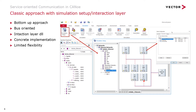Before we go to the new approach, let's look back at how we made simulations in the last 15 to 20 years within CANoe. We had a classic bus-oriented, bottom-up approach — CAN, LIN, FlexRay, Ethernet communication. We loaded the database, said we want to simulate a node, used an interaction layer DLL which knows how to interpret the DBC file or whatever, and knows: I'm in the role of IC, so I need to transmit these 10 frames cyclically and receive those frames. This worked fine for CAN, LIN, and FlexRay; for SOME/IP it was difficult but somehow worked.